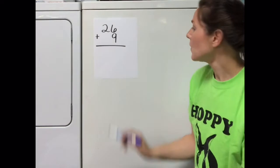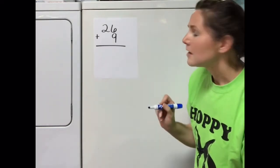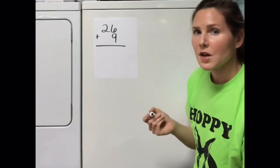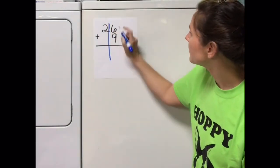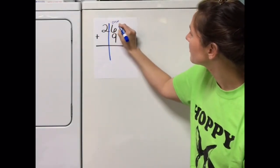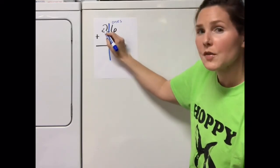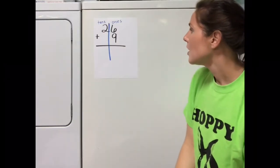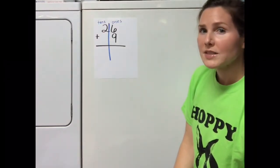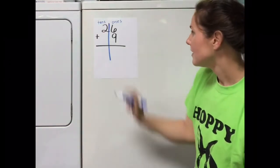Let's go ahead and get started. This problem says 26 plus 9. Last time we learned that we always want to start with the column that is the furthest to the right. In this case, the ones column. This column over here is called the tens column.